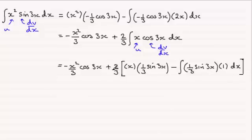Next, I'm just going to expand the bracket rather than carry out that integral here. So we've got minus x squared over 3 cosine of 3x. And expanding the bracket here, we've got 2 thirds times a third, which is going to be 2 ninths. So we've got 2 ninths times the x. So that's plus 2x over 9, and then it's sine 3x.